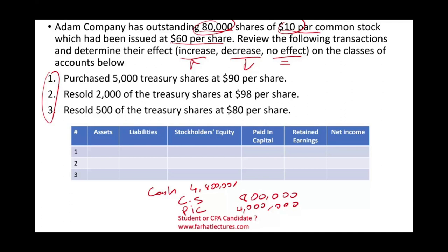It's very important to understand the original issuance entry, because purchasing treasury stock is simply the opposite. Common stock is always the number of shares times the par value — anything left is paid-in capital. So we received cash of $4.8 million, common stock is $800,000, and paid-in capital is $4 million. When we issued those stocks, assets went up and equity went up.